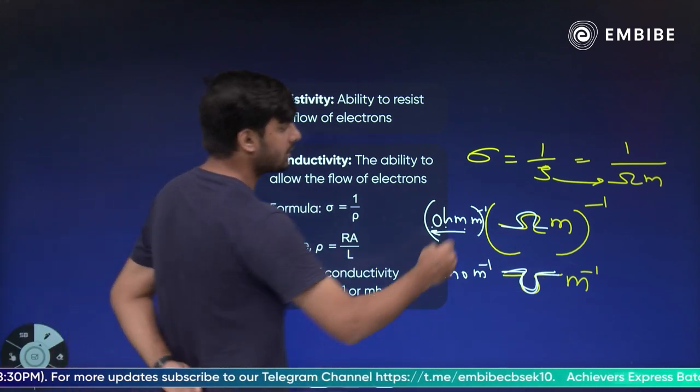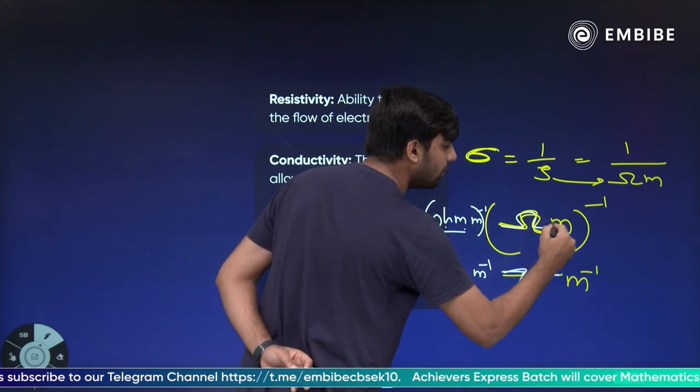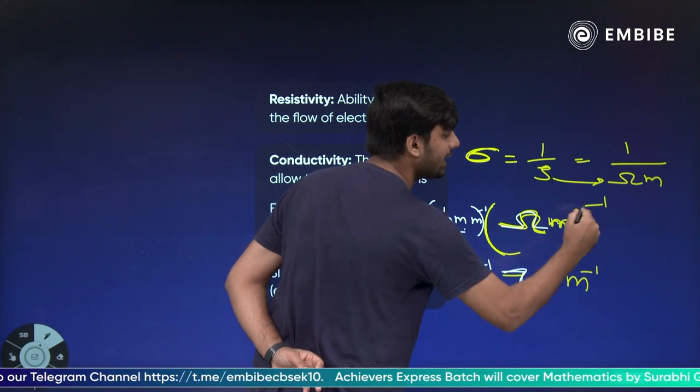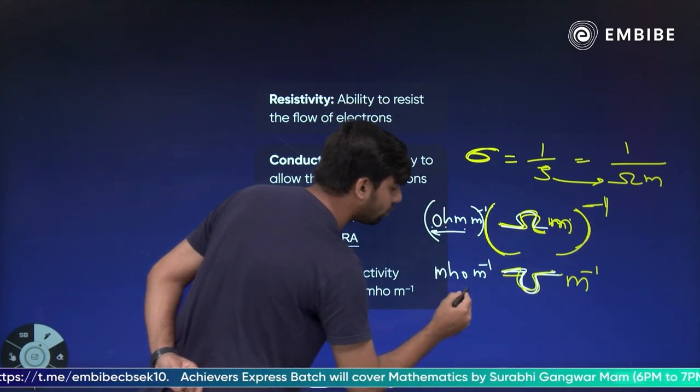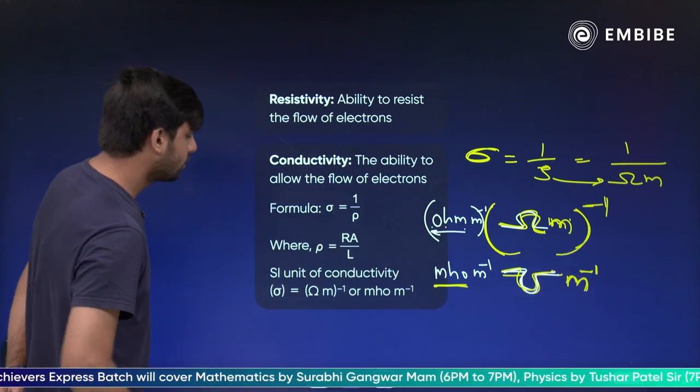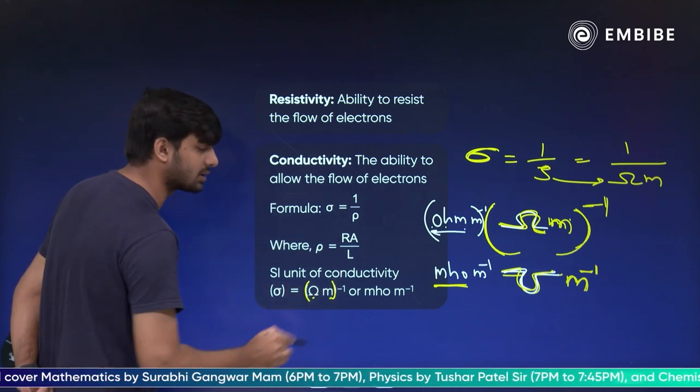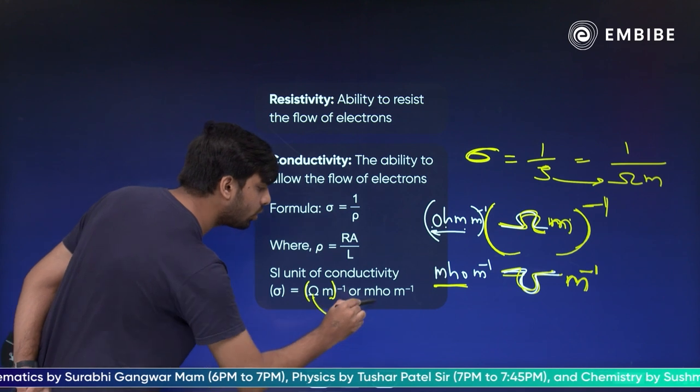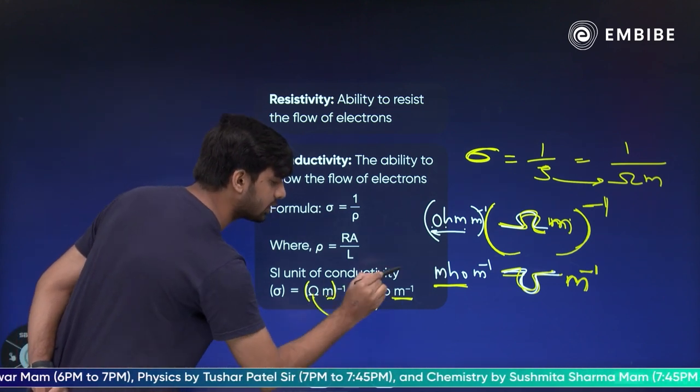Ki conductivity ka jo unit hota hai, wo hota hai ohm aur meter dono ka inverse ya phir ohm ka inverse already le lo usko bol do mho aur yeh meter ka sirf akele ka inverse. Samajh mein aa gaya. To yahan pe dekho ohm aur meter dono ka bracket ke bahar inverse hai ya phir ohm ka ulta mho bol diya aur meter ka inverse, meter inverse bol diya.